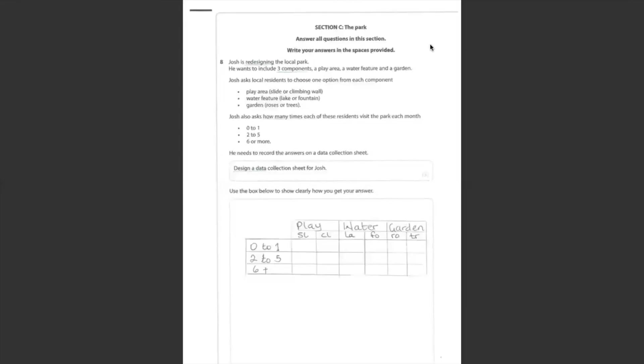Question 8. Josh is redesigning the local park. This is great. He wants to include three components. In these three components, the play area will either have a slide or a climbing wall. The water feature will either have a lake or a fountain. And the garden will either have roses or trees. We need to design a data collection sheet for Josh. Let's remember, it needs to be very effective.